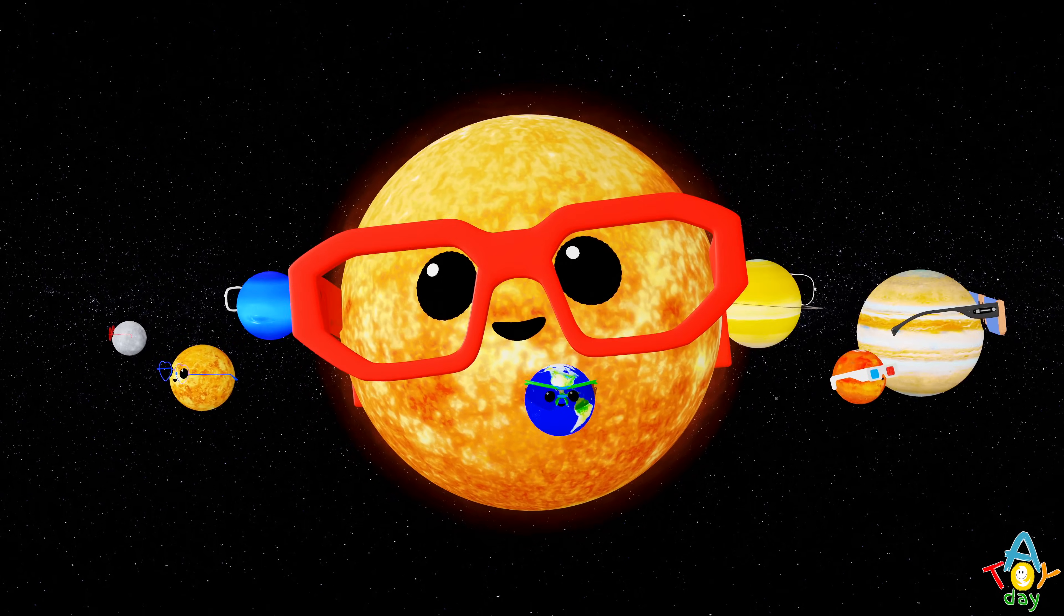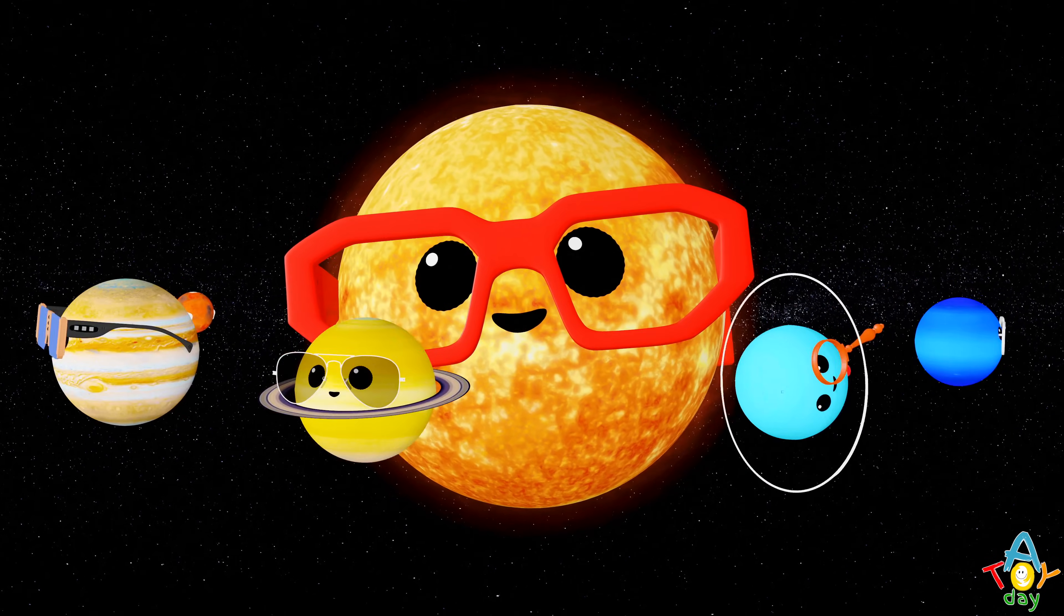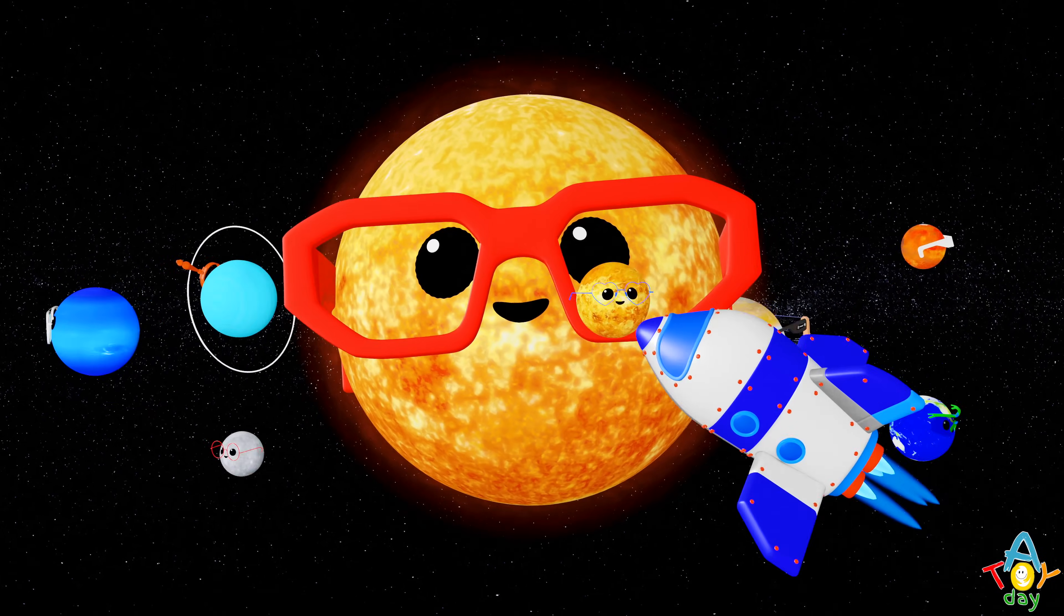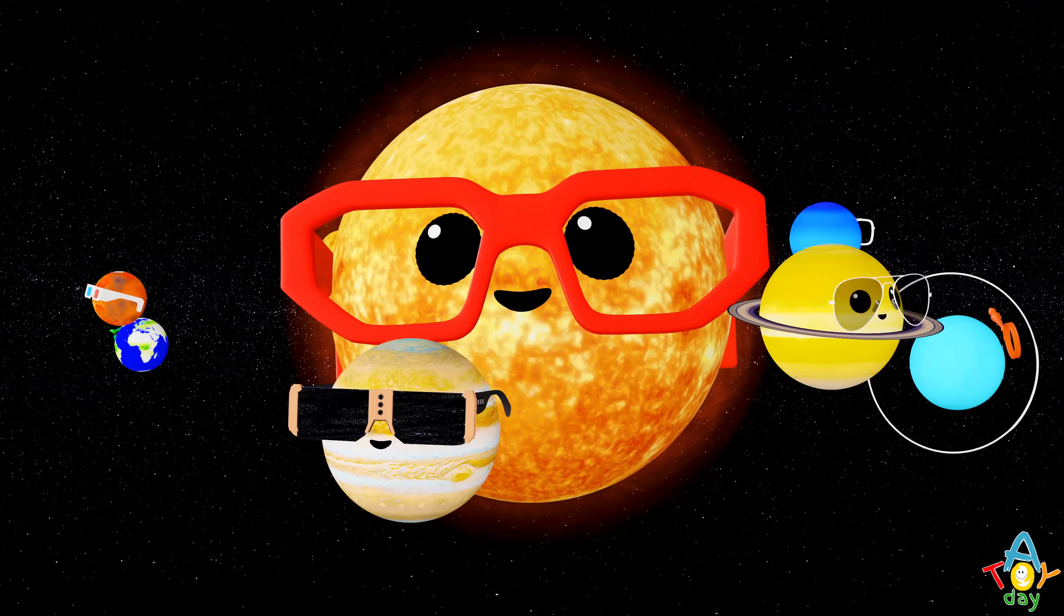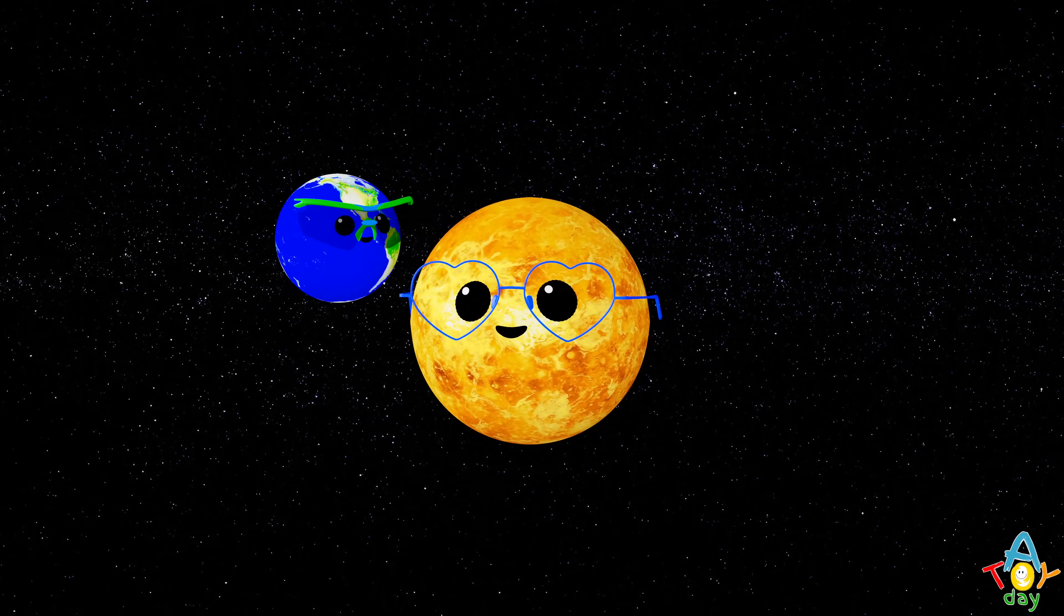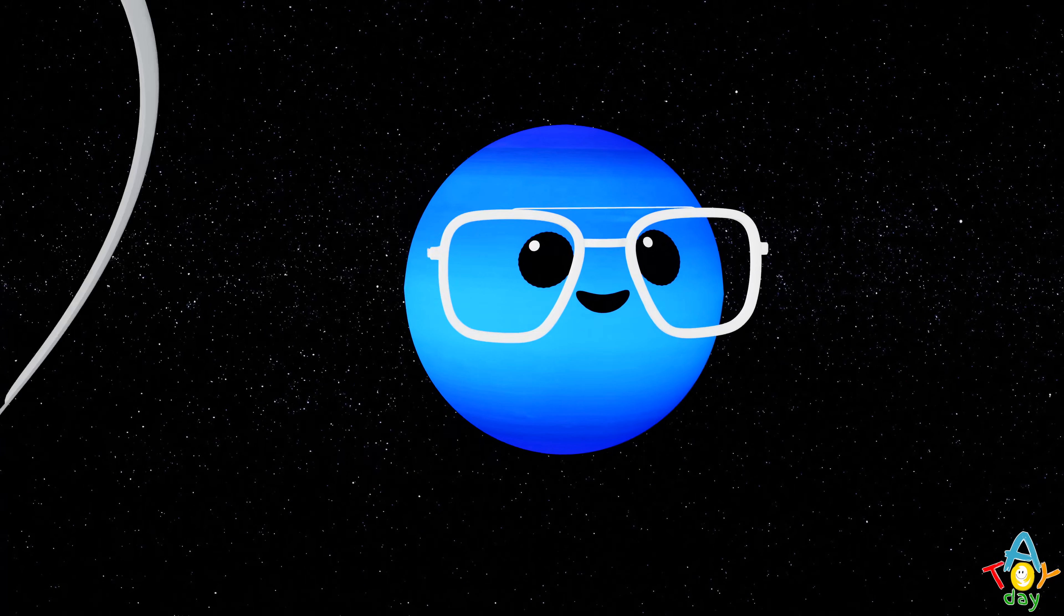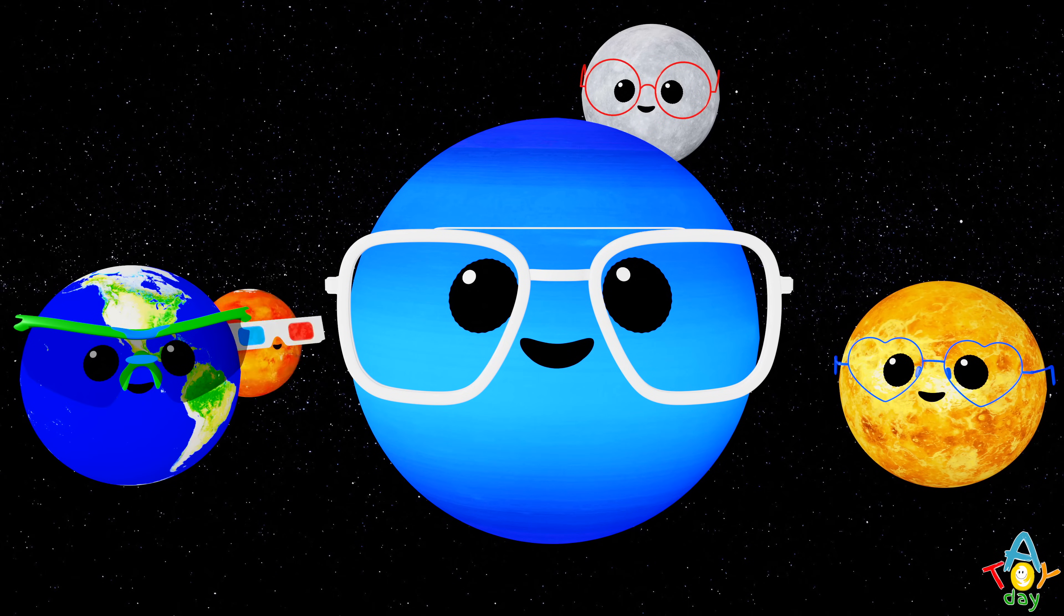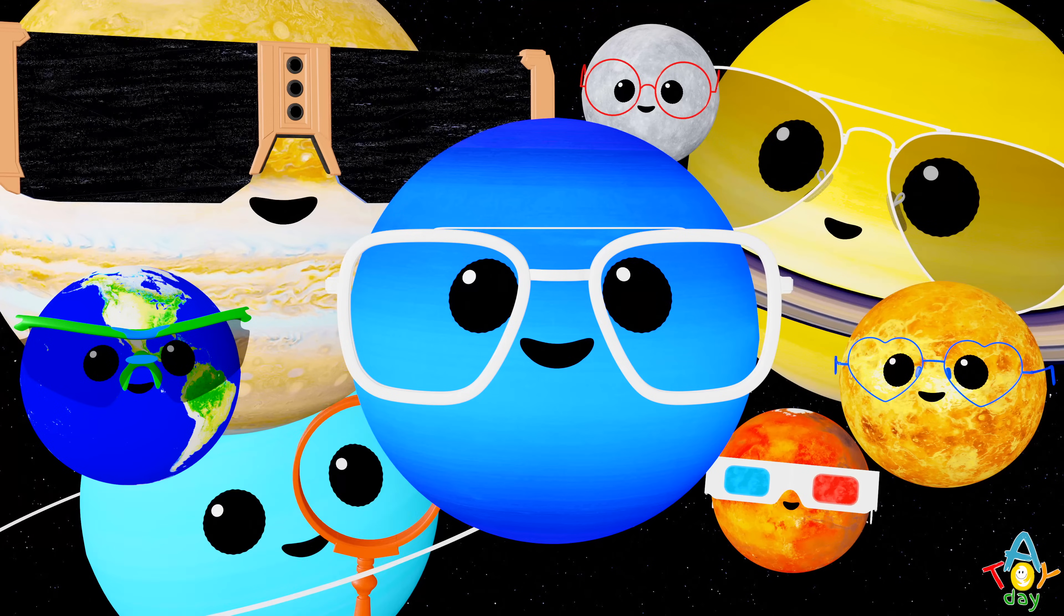The planets go round, around the sun. Spinning and turning, having fun. Eight little planets, big and small, there's room in space to learn them all.